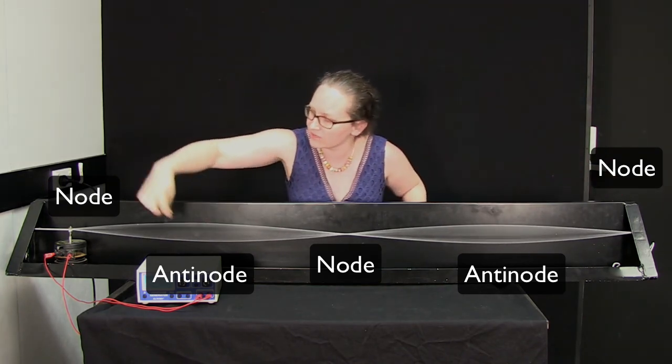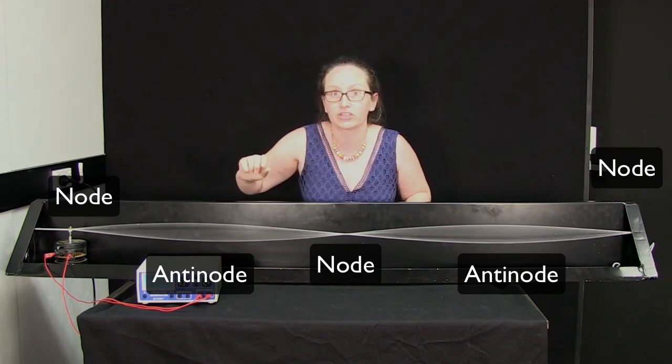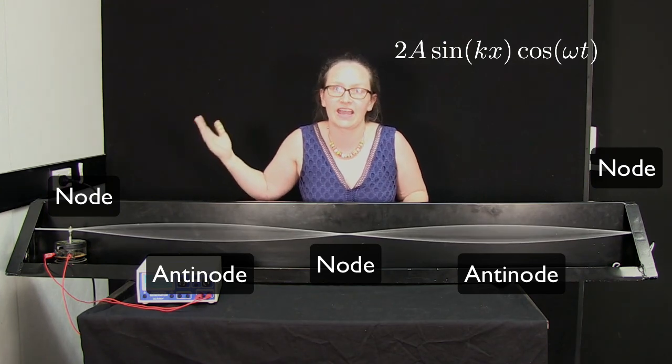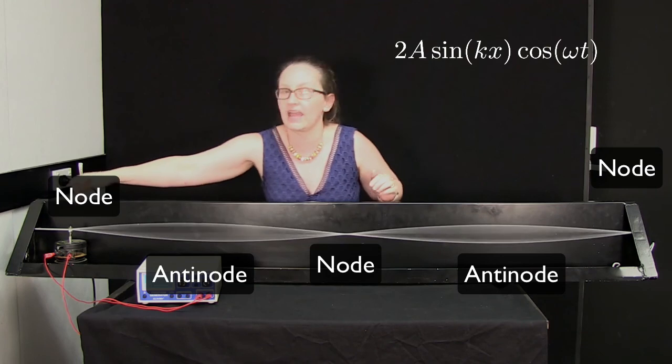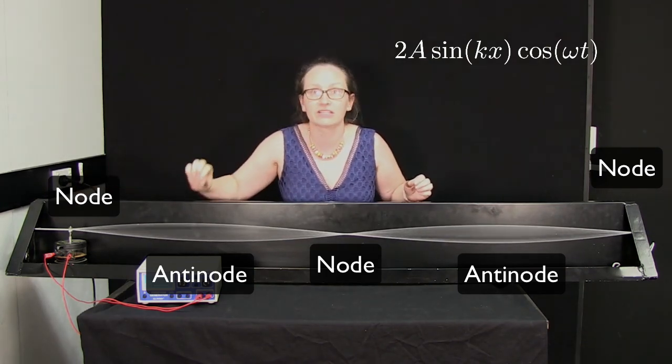At each piece of the string, the string itself is moving with simple harmonic motion, and the amplitude of that motion is given by 2a sin kx. So that depends on how far from the end of the string the piece of string that we're considering is.